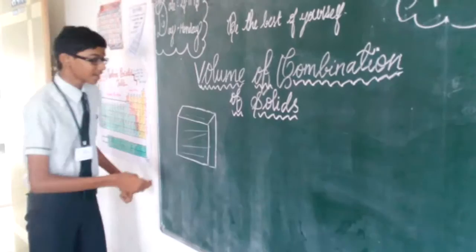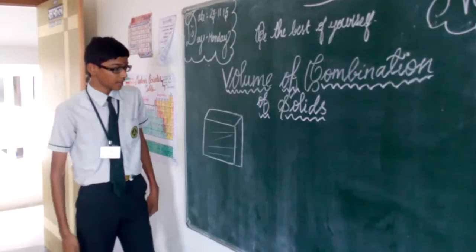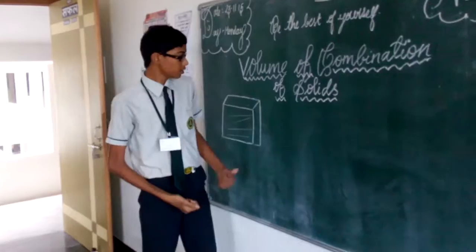Area can be measured in both 2D shapes and 3D shapes, whereas volume can only be measured in 3D shapes. The unit for area is square units, and volume is measured in cubic units, as it includes three dimensions: length, breadth, and height.